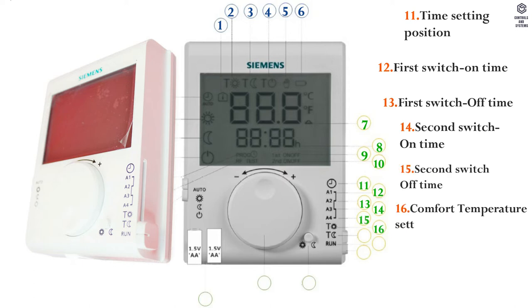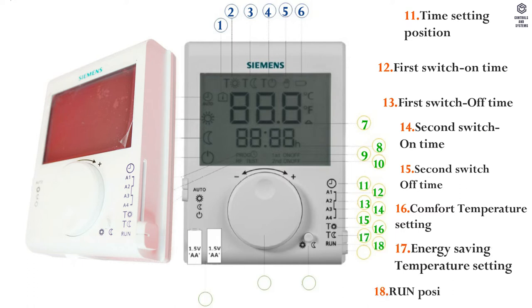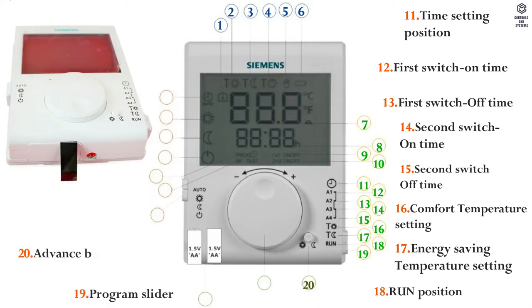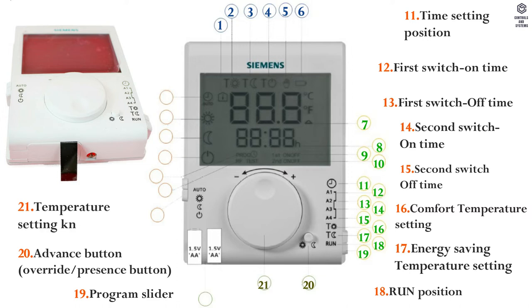16. Comfort temperature setting. 17. Energy saving temperature setting. 18. Run position. 19. Program slider. 20. Advance button. 21. Temperature setting knob.